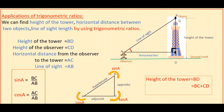Now I am going to tell how to find the height of a tower, horizontal distance between any two objects, and line of sight length using trigonometric ratios. Here ABC is a right triangle because this angle is 90 degrees. The height of the tower is BD. We can find BD if we know the height of the observer, which is CD, so BD equals BC plus CD. If we find BC and know CD, we get BD, the height of the tower. We can also find AC using trigonometric ratios.